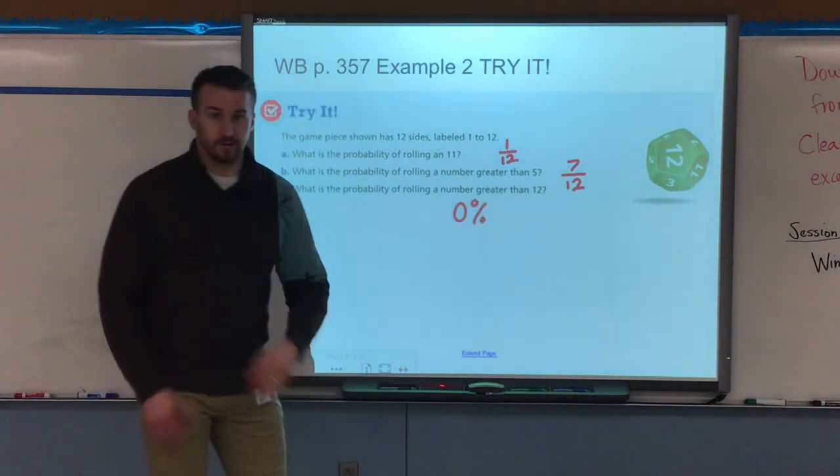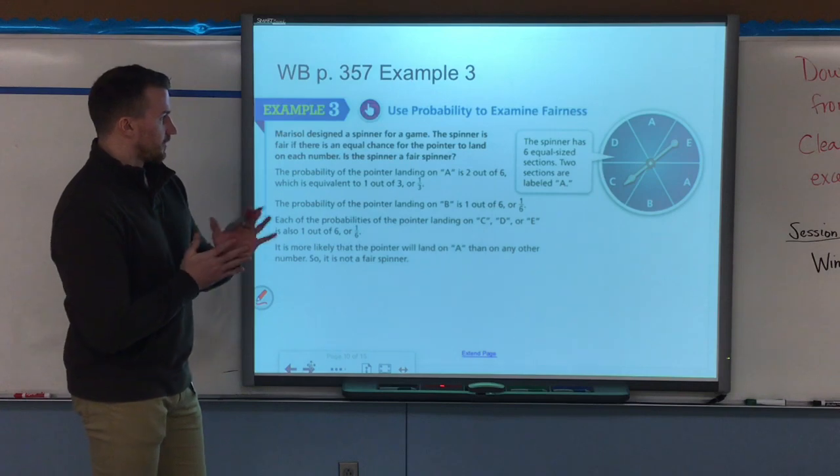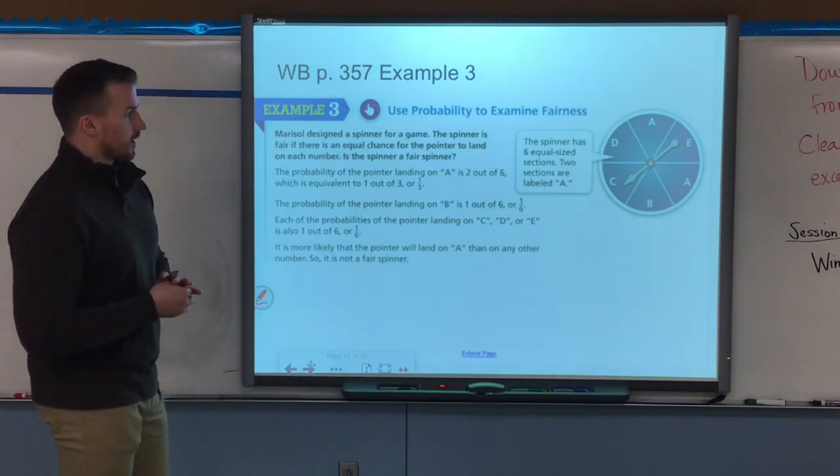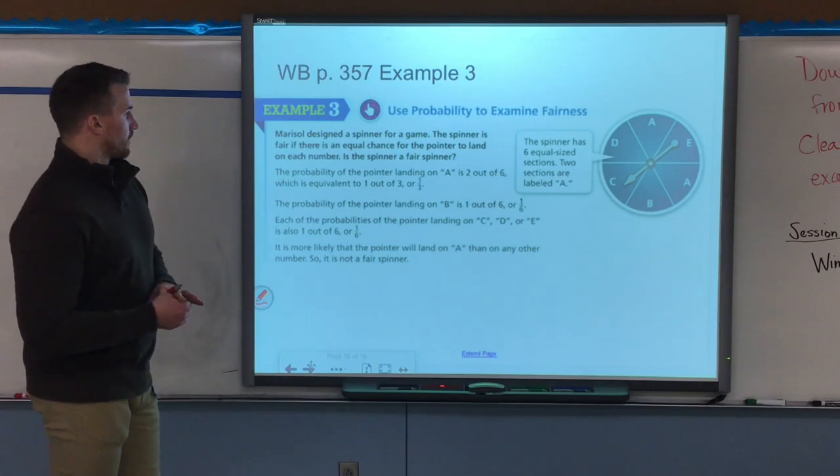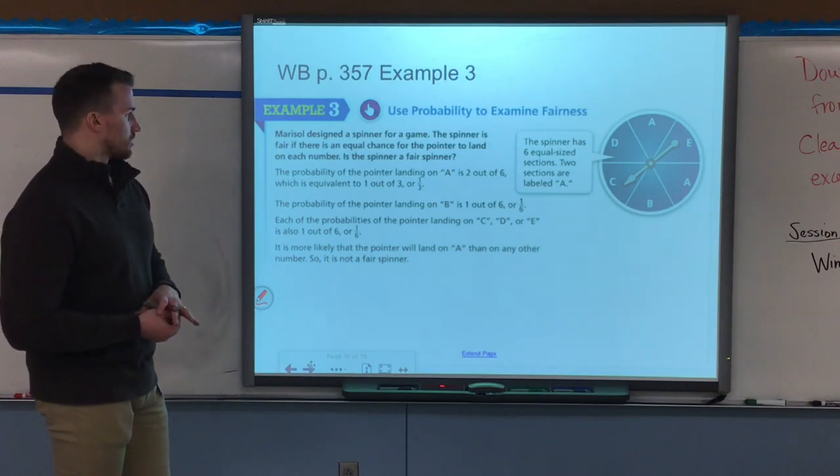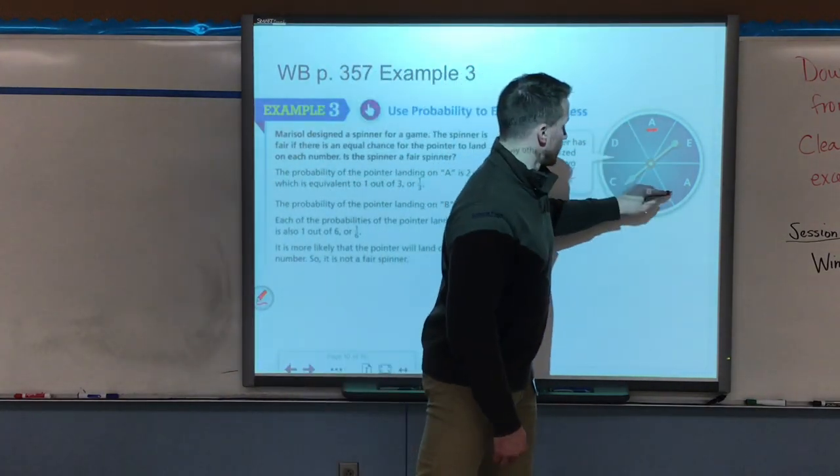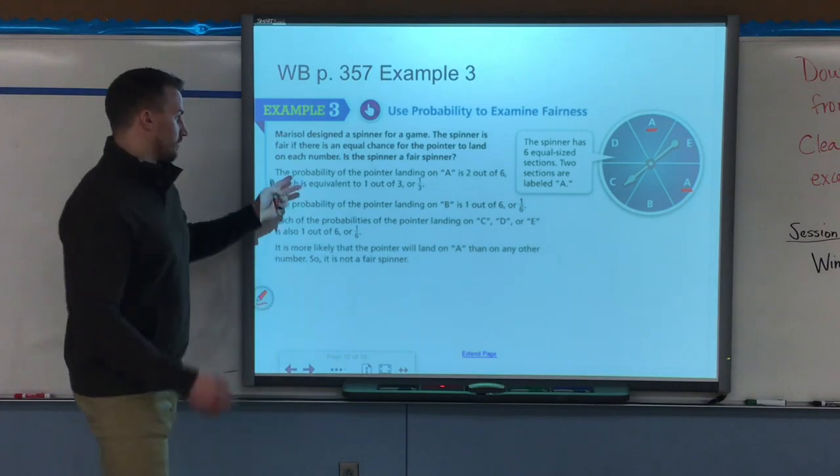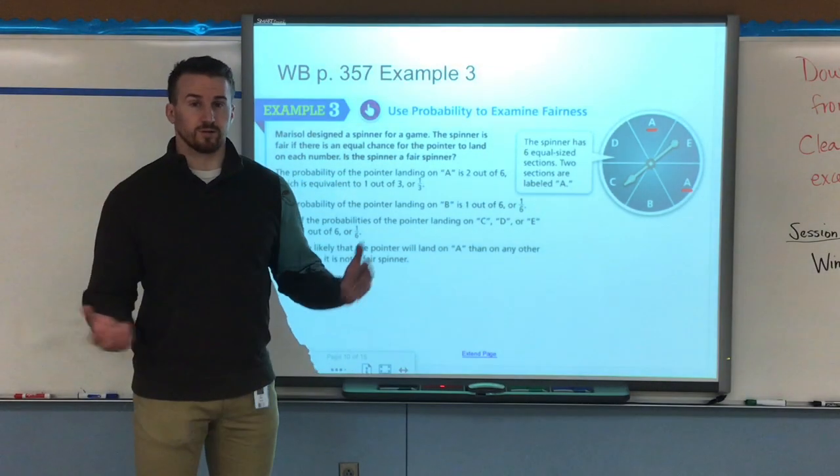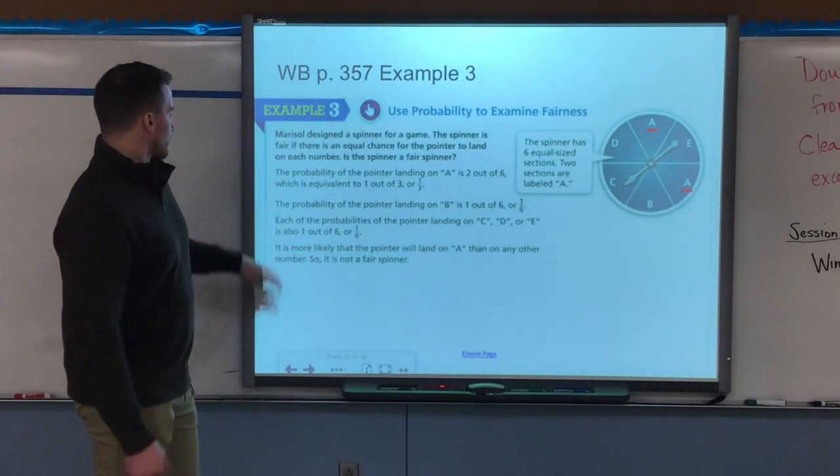Last example here we go, examining fairness for probability. Marisol designed a spinner for a game, labeled the sections as follows: D, A, E, A, B, and C. The spinner is fair if there is an equal chance for the pointer to land on each number, or in this case letter. Is a spinner a fair spinner? Well we have, as you can see, six equal sections but there's one letter that has two sections, the rest just have one. So the probability of the pointer landing on A is two out of six where all the rest are one out of six, so is it fair? No it's not, because that's one third out of the entire thing where the rest are just a sixth.